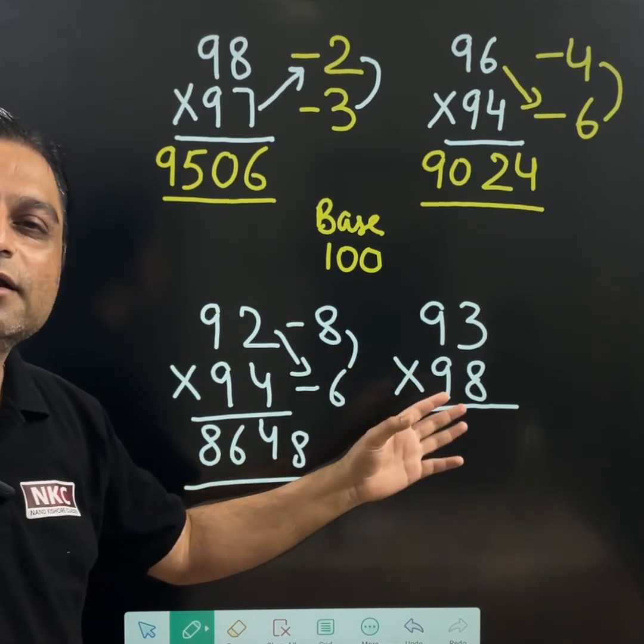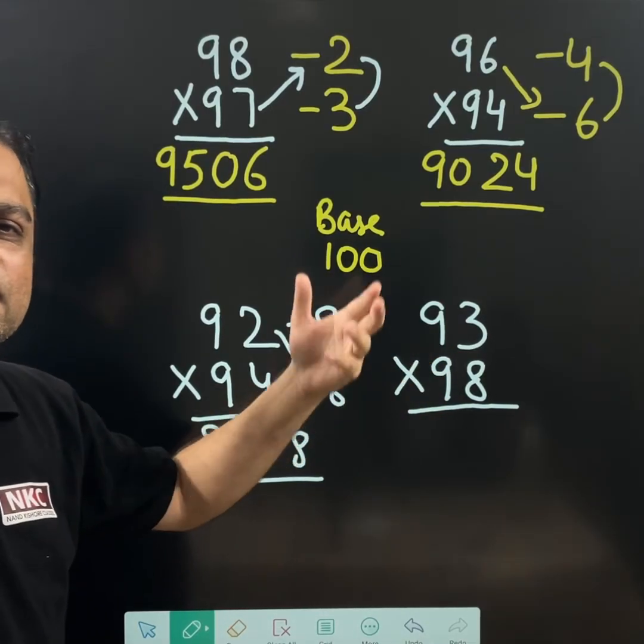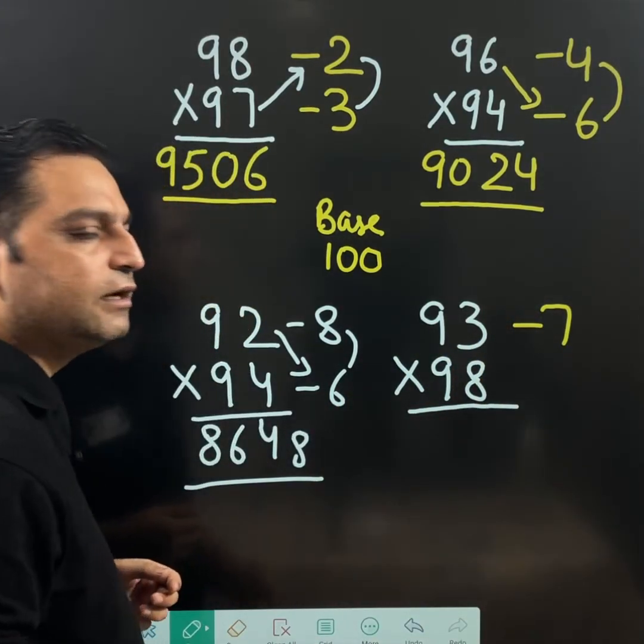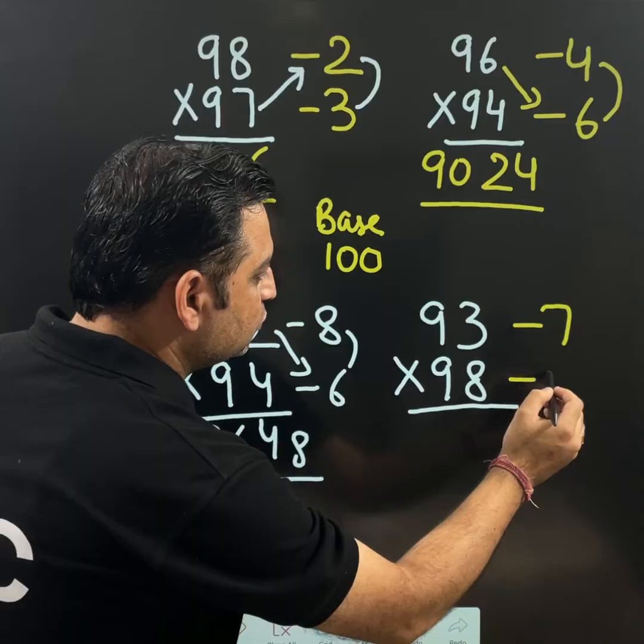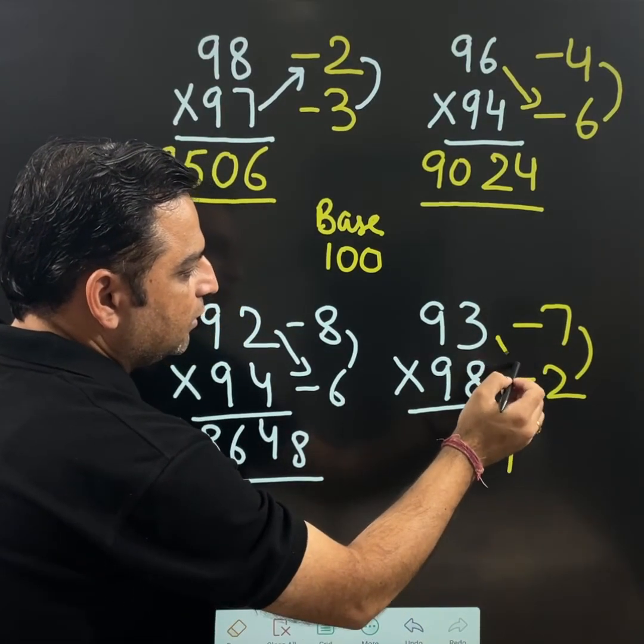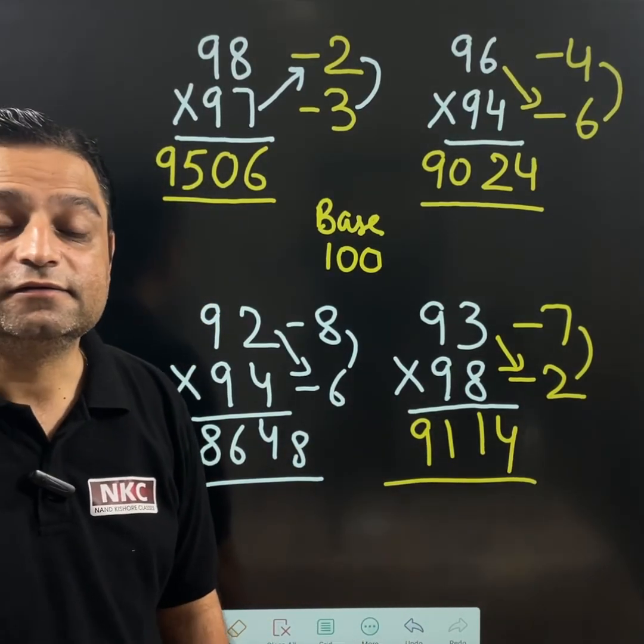You can also try the last question yourself and you can let me know what you have got the answer. I am also doing it so that you can compare as well. See, 100 minus 7 gives you 93. 100 minus 2 gives me 98. 7 multiplied 2 is 14. 93 minus 2 is 91. So this is going to be the final answer.